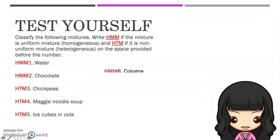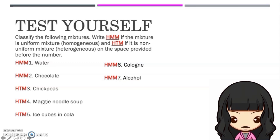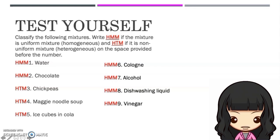For number six — Cologne: the answer is HMM. For number seven — Alcohol: the answer is HMM. For number eight — Dish washing liquid: the answer is HMM. For number nine — Vinegar: the answer is also HMM. And for number ten — Soil: the answer is HTM.